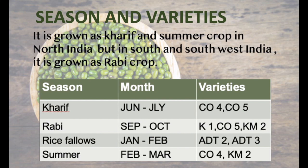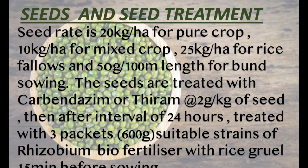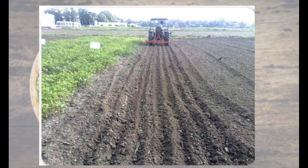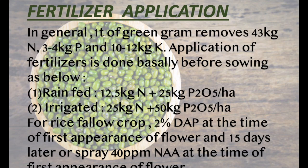Season and varieties: It is grown as a kharif crop and in summer. Seeds and seed treatment: Seed rate is 20 kg per hectare for broadcasting, and 10 kg per hectare for line sowing. Fertilizer application is also carried out at this stage.